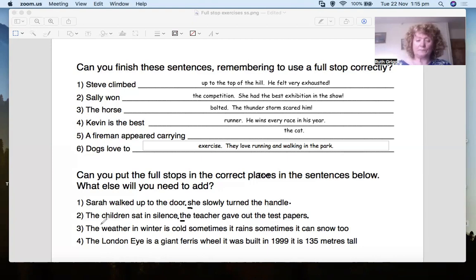Okay, let's look at the next one. The weather in winter is cold. Full stop. Sometimes it rains. Sometimes it rains. Sometimes it can snow too. So this could be two sentences or even three sentences. So I'm going to put a dot there at the end. We know that one's finished. It's finished. Let's look at the phrases. Where we would take a breather. The weather in winter is cold. The weather in winter is cold. Full stop. Sometimes it rains. It rains. We could put a full stop there and a capital here. Sometimes it can snow too.